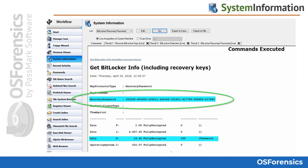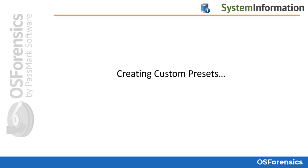You will notice that any BitLocker devices will be highlighted in blue, and any non-BitLocker encrypted devices will be highlighted in yellow. This simply helps direct the user to the most relevant information as quickly as possible.